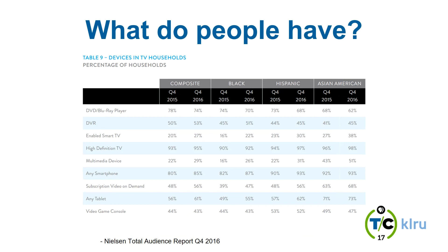We're seeing 43% year-over-year growth in enabled smart TVs from Q1 2015 to Q1 2016 — that's huge growth. More recent data from Q4 2016 shows it's now at 35% year-over-year growth, so that growth is slowing a bit. As you get everybody enabling their smart TVs, eventually that year-over-year growth naturally slows down.